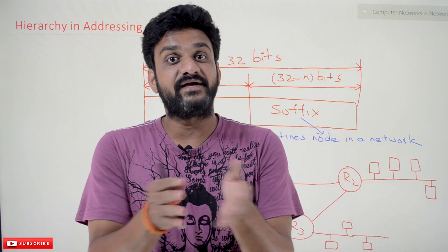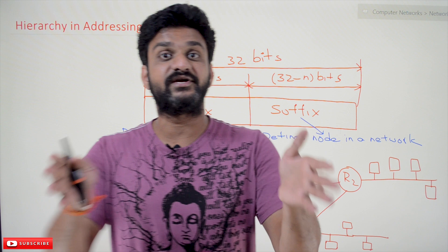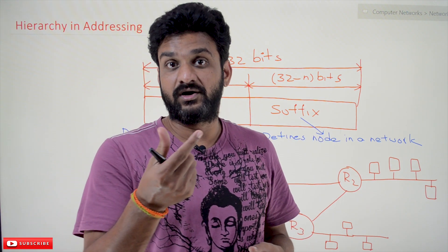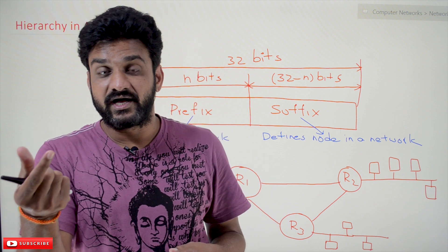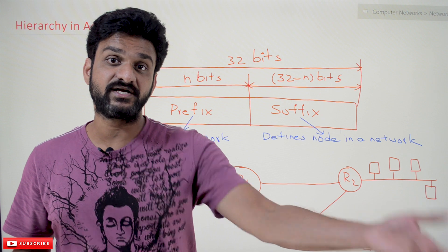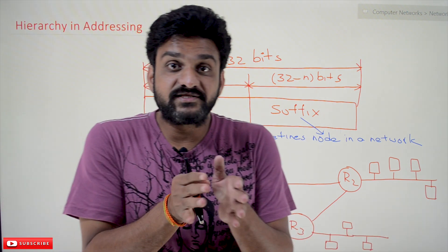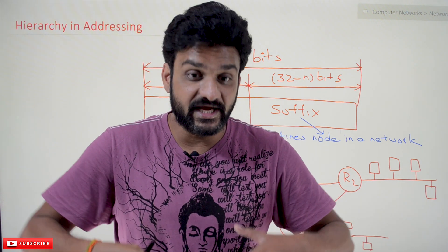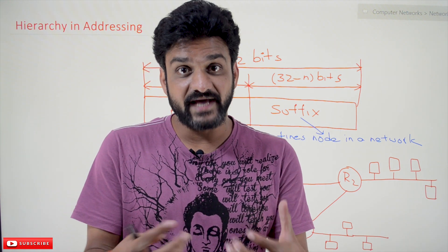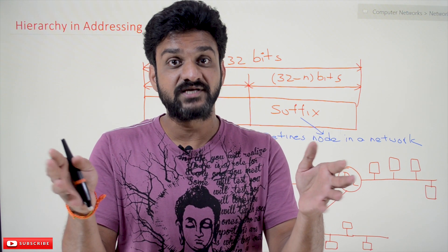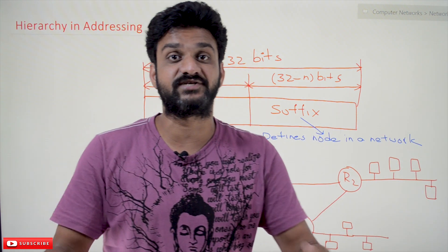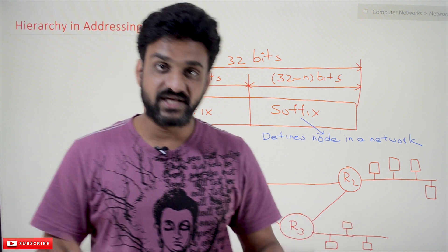If you take a telephone number, the entire landline number is divided into three or four pieces: a country code, a state code, then an exchange number, and then the subscriber number. This is how addresses are hierarchically divided for efficient utilization. This hierarchical division applies to both postal addresses and telephone numbers, all for the efficient utilization of the numbers.